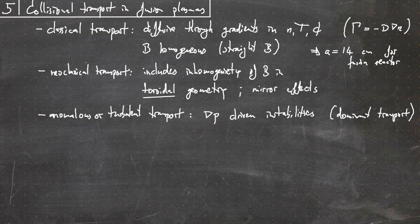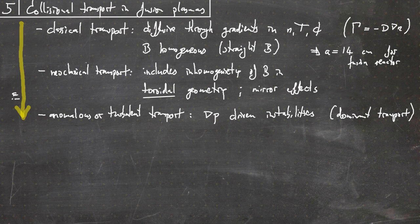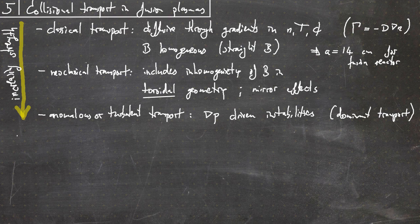One can draw an arrow indicating the direction of increasing strength across these three transport mechanisms. What we are doing in this chapter is an intuitive derivation of the transport coefficients.